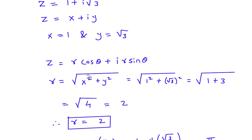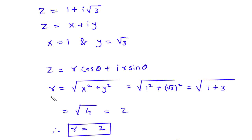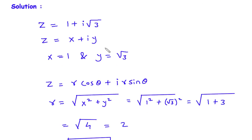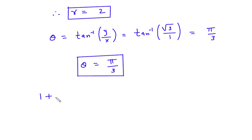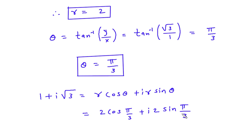We also have the value of r, so from this we can find the polar form. The polar form of 1 plus i root 3 is equal to r cos theta plus i r sin theta, which is 2 cos(pi by 3) plus i 2 sin(pi by 3). This is our final answer.